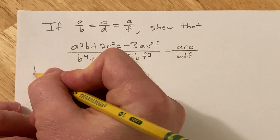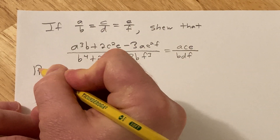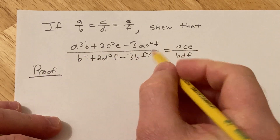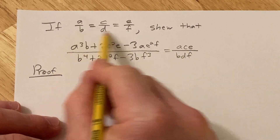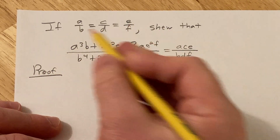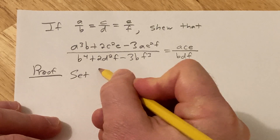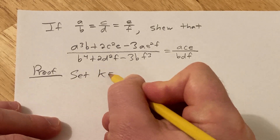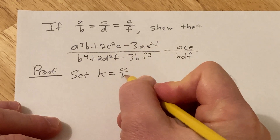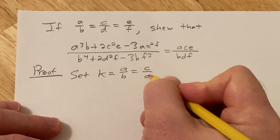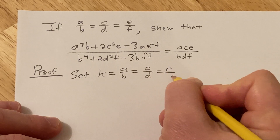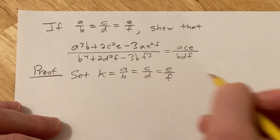Let's go ahead and prove this. We're going to assume this is true. Let's give it a name — I'm going to set K equal to A over B, equal to C over D, equal to E over F. Just so we have a name for it.